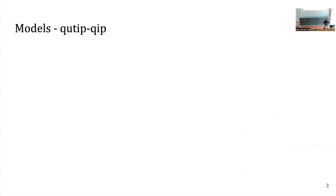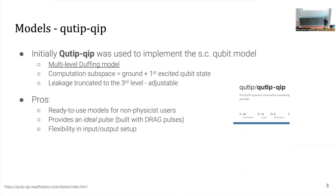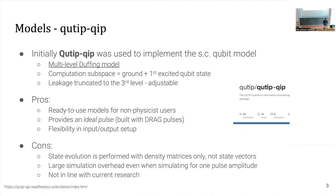A bit about the models I was using, considering I'm a non-physicist. The first one I got a grip of was the SCQBITS model in the Qiskit quantum information processor. It implements a multi-Duffing model; its computational subspace is the first and ground states. Its advantage is it's easy to use with predefined Hamiltonians. However, it uses density matrices only for state evolution — not state vectors — which makes it slow. There's a lot of simulation overhead, and for reinforcement learning we need cheap simulations.